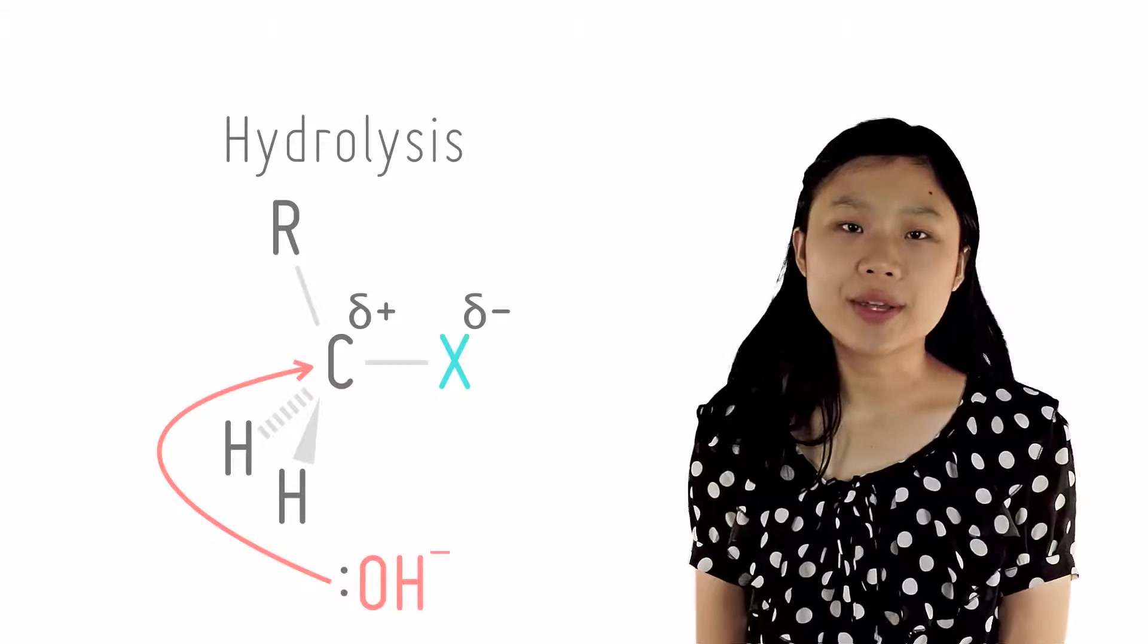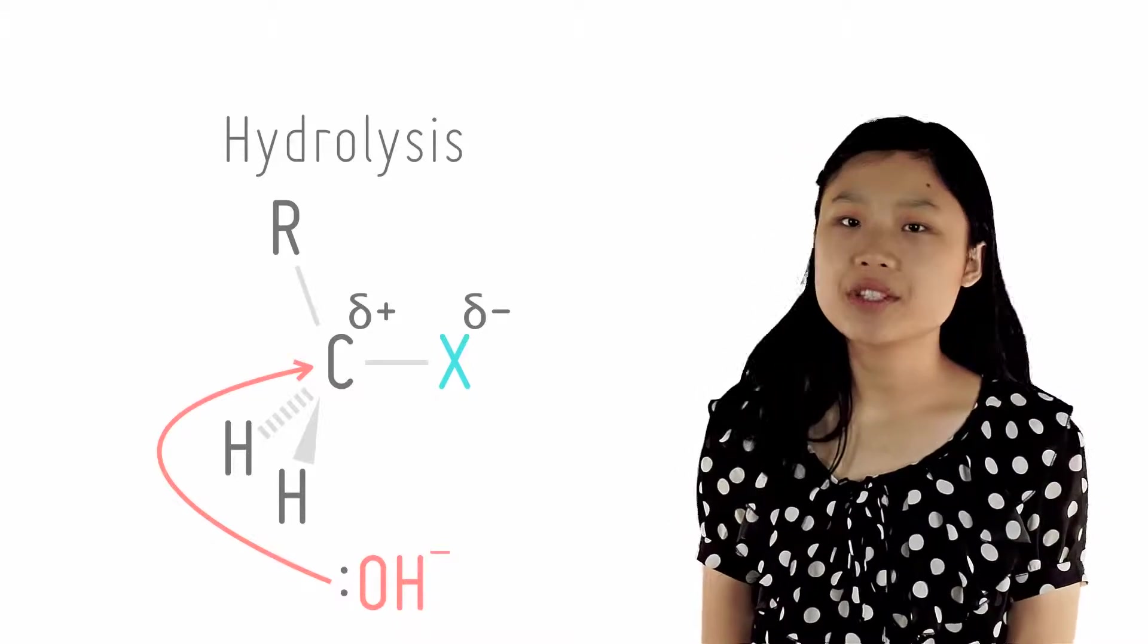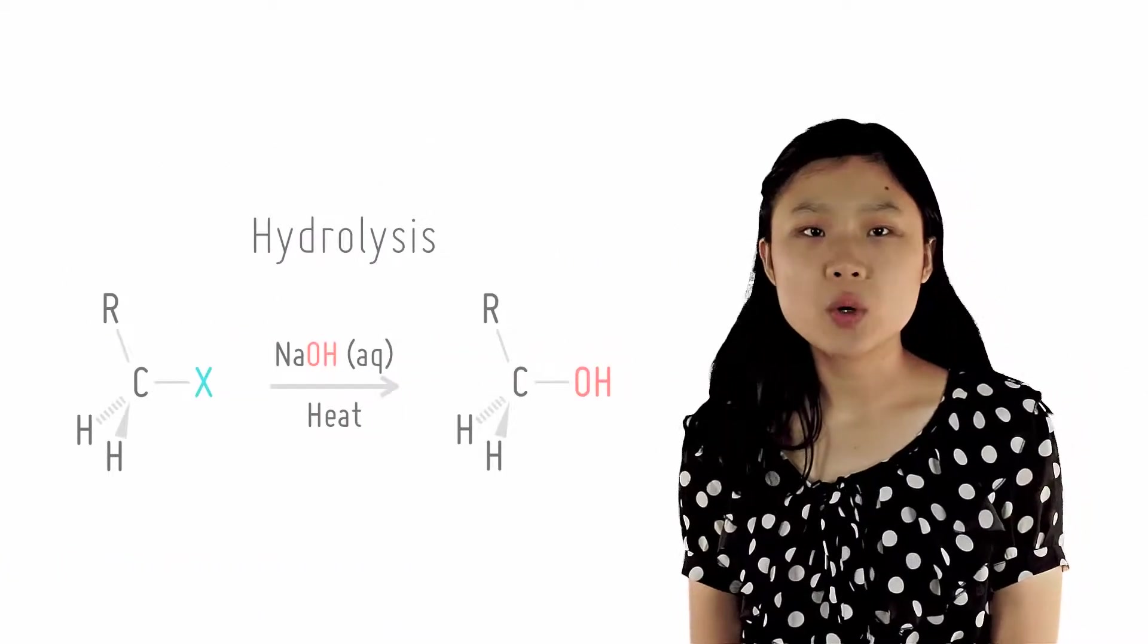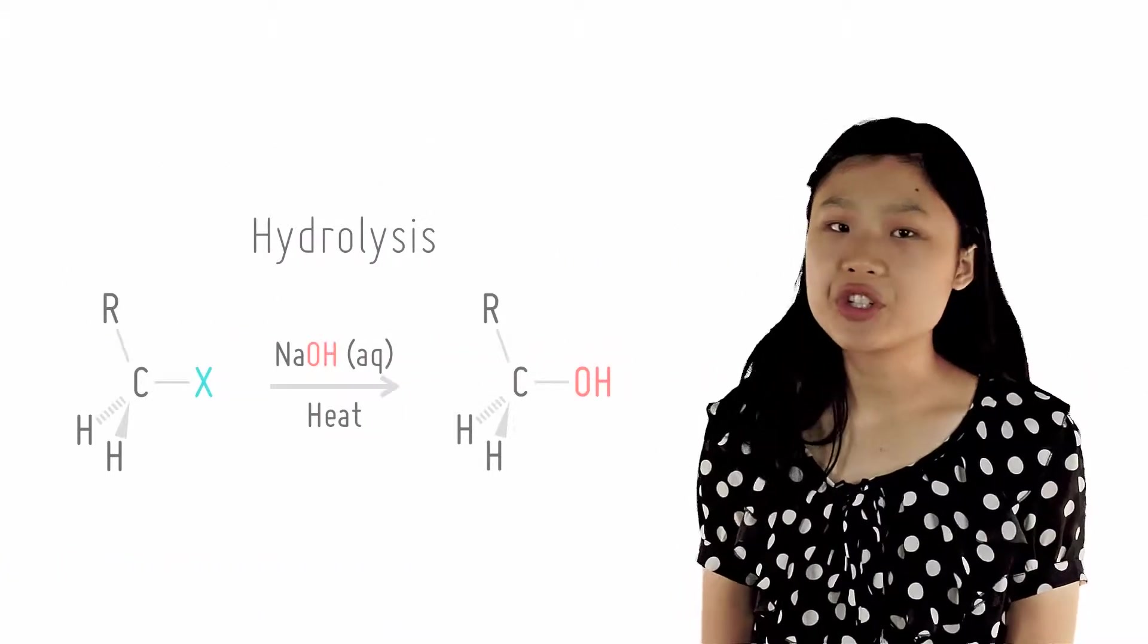The halogenoalkane is heated with an aqueous alkali, and OH is the attacking nucleophile. The reagent is aqueous KOH or NaOH, and the condition is simply to heat.